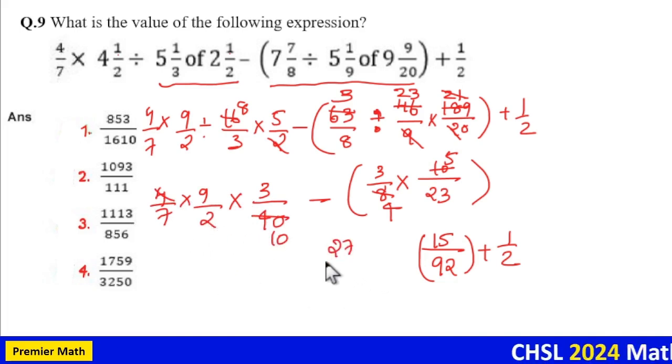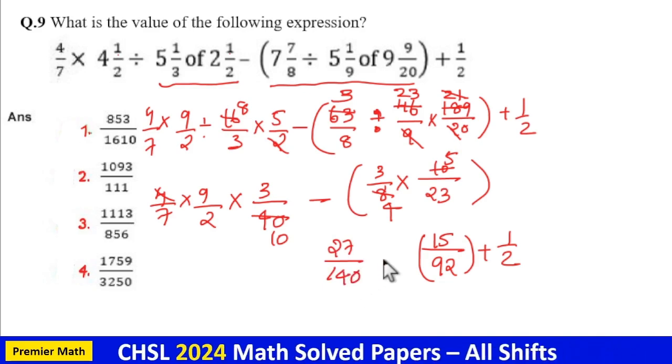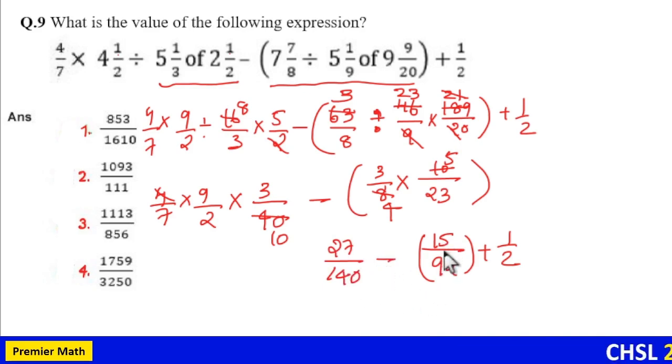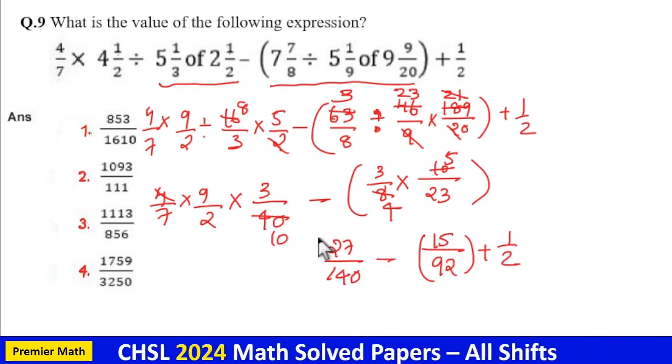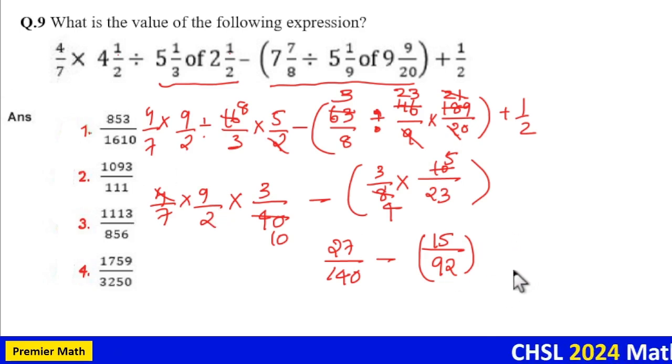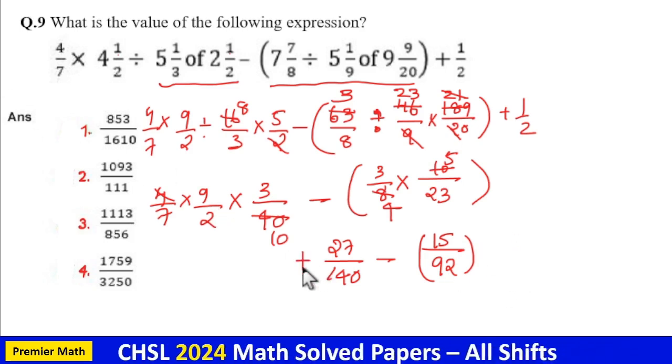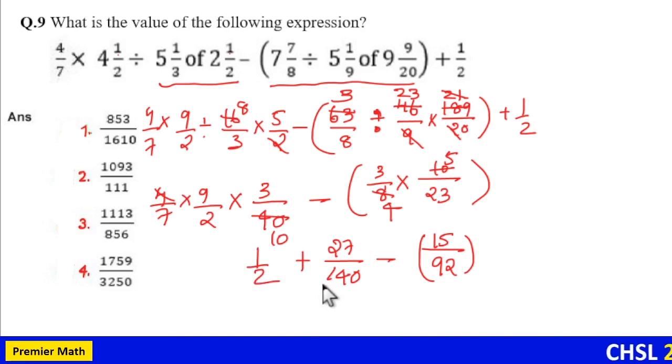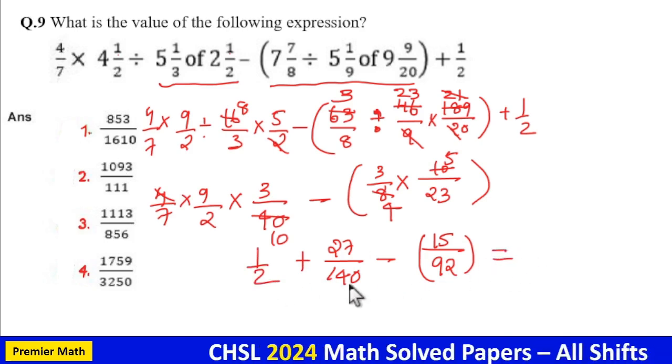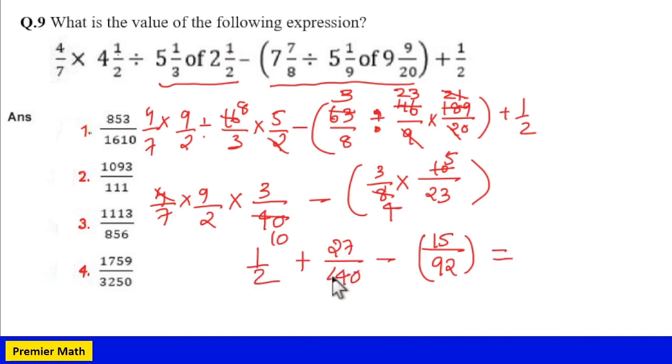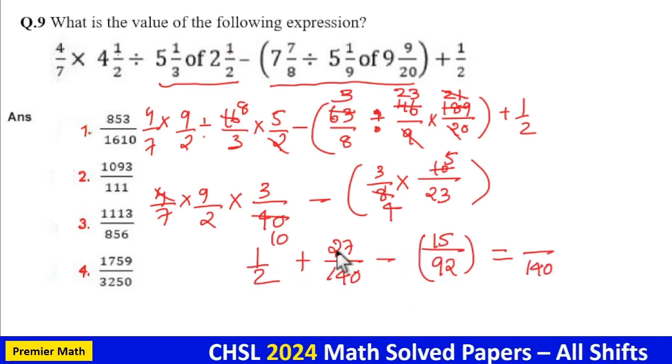So this will become 27 by denominator 140 minus 15 by 92 plus 1 by 2. Now I will write this 1 by 2 here. Now solve this. So this will become 1 by 2 plus 27 by 140. Take 140 as denominator.